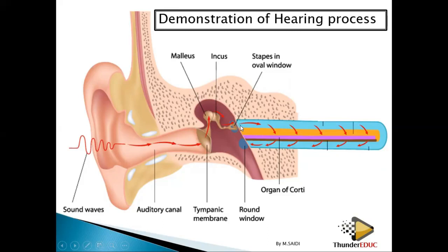The vibration is transmitted into the fluid of the inner ear. The oval window causes the fluid in the cochlea — the perilymph — to vibrate. As it vibrates and makes a wave, some of the wave or vibration enters the endolymph. It's called perilymph because it is on the peripheral sides of the cochlea.